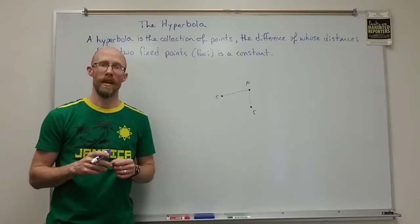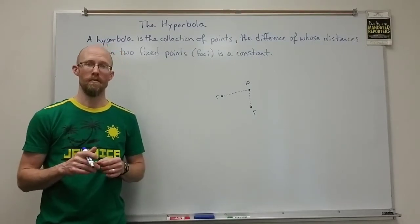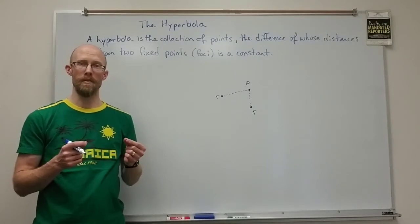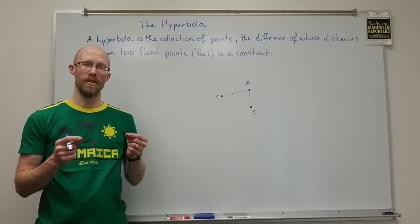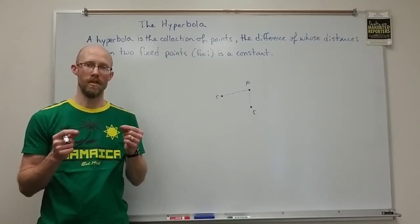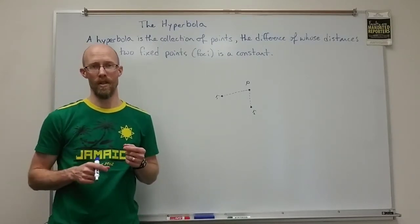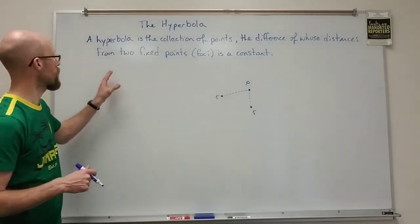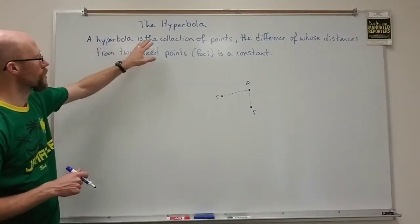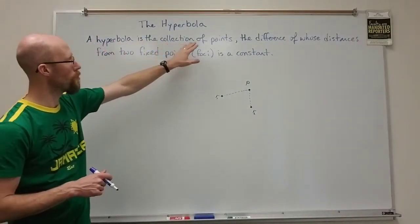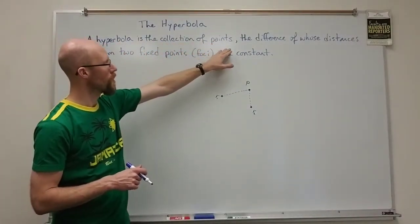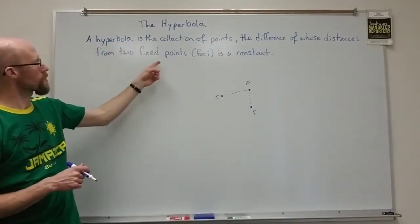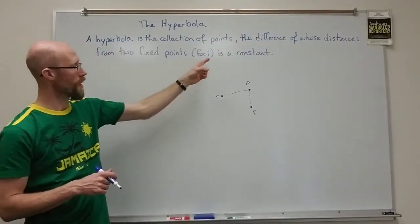A hyperbola is basically a similar idea to an ellipse, but instead of the sum of their distances, we're looking at the difference of their distances. So technically, a hyperbola is the collection of all points the difference of whose distances from two fixed points is a constant.